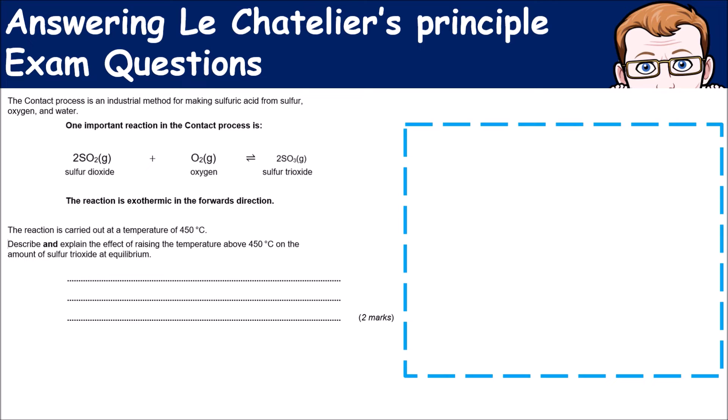The second bit talks about the effect of temperature on the rate of reaction. The first key thing we need to remember is that our reaction is exothermic in the forward direction. The reaction is carried out at 450 degrees. Describe and explain the effect of raising the temperature above 450 degrees.